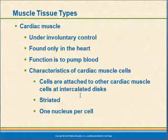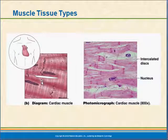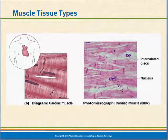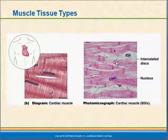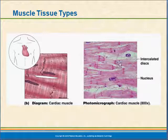Cardiac muscle is striated just like skeletal muscle — you can see the pattern of proteins that allow it to contract with good force — but there is only one nucleus per cell because the cells are short. Additionally, the cells are branched: rather than being long and linear, they are short with branches going off in many directions. Looking at actual cells, you can see the dark bands that are the intercalated discs, single nuclei in the cells, fine striations, and the branching structure.